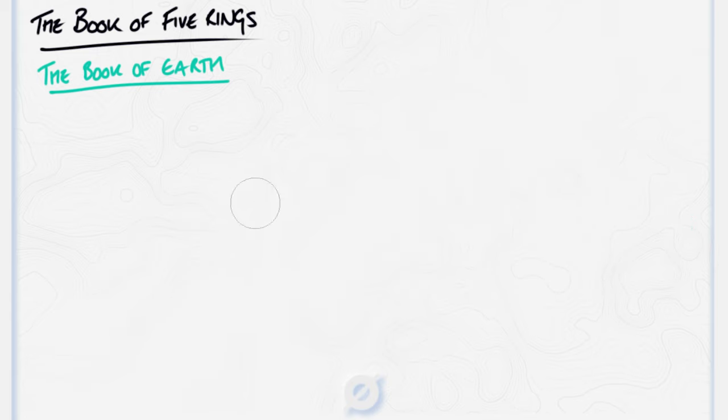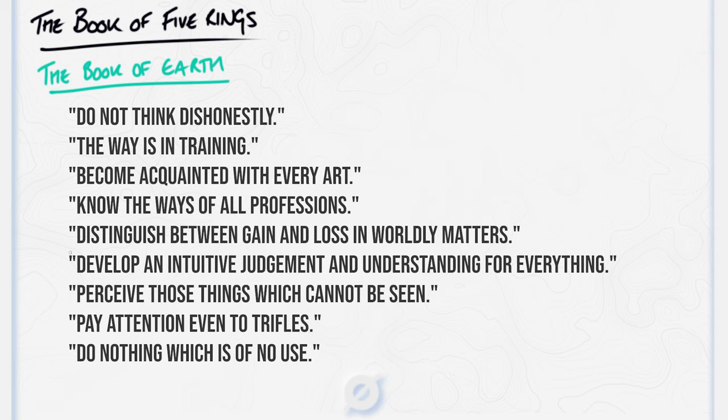The Book of Earth ends with a list of nine principles, describing the foundation on which a person should be built. Almost like Musashi's practical guide to building and maintaining character. These are: Do not think dishonestly. The way is in training. Become acquainted with every art. Know the ways of all professions. Distinguish between gain and loss in worldly matters. Develop an intuitive judgement and understanding for everything. Perceive those things which cannot be seen. Pay attention even to trifles. Do nothing which is of no use.